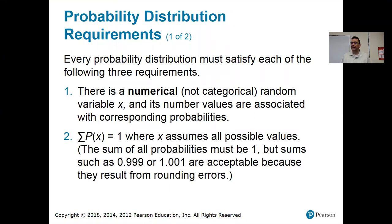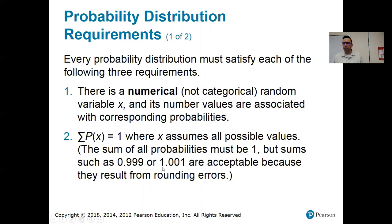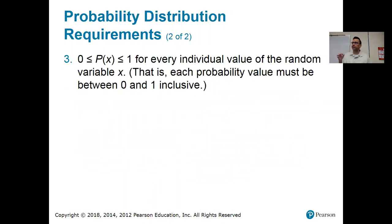Number two: the sum of the probabilities has to equal one. When you list all possible values of your random variable and add all those probabilities together, they have to add up to one. Sometimes probabilities are rounded, so it's possible the sum will be something very close to one, like 0.999 or 1.001 — that's probably just rounding. But if it came out to 1.2 or 0.75, something is wrong. Number three: each individual probability has to be between 0 and 1.